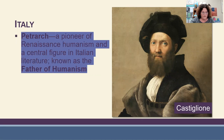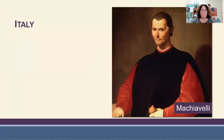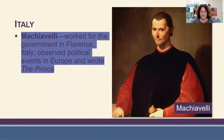Looking at Renaissance writers in Italy: Petrarch was a pioneer of Renaissance humanism and a central figure in Italian literature, known as the father of humanism. He composed poetry in Latin following the style of ancient Roman poets. Castiglione was another Italian author who wrote a famous book on etiquette and social behavior called The Courtier, describing proper conduct for the Renaissance man. Machiavelli worked for the government in Florence, observed political events in Europe, and from those observations wrote a book called The Prince.